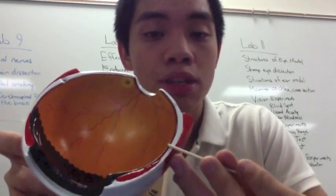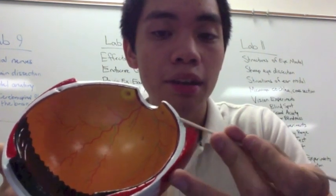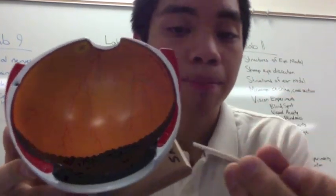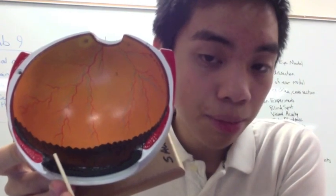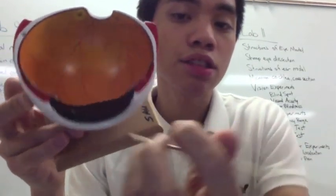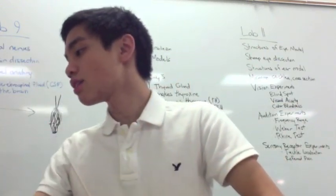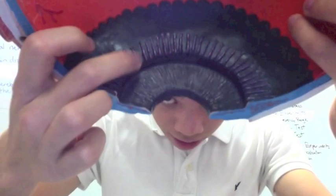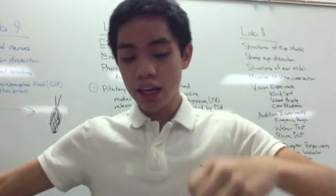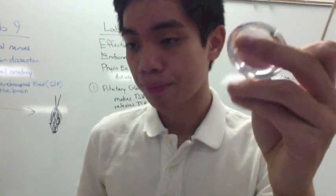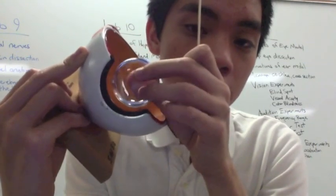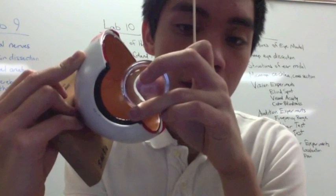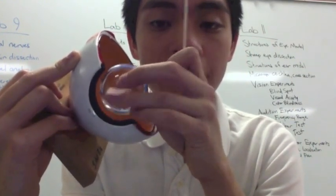Next we have the vascular layer, which is the middle layer, composed of your choroid — that middle brown layer in the back — and your ciliary body, which is this thickened area that protrudes out. What comes off your ciliary body are your ciliary processes, these little things that connect to your lens.